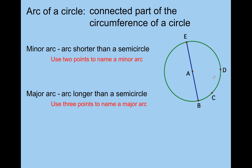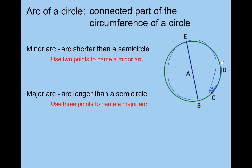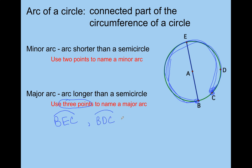Let's go back and talk about this. Two ways you can name arc BC: arc BC or arc CB — either one is perfectly fine. For a major arc, you're still only allowed to use three points. Arc BEC would be okay, or arc BDC. If you start with C instead of B, you could say arc CEB or arc CDB. You can turn it around and get the same arc either way.